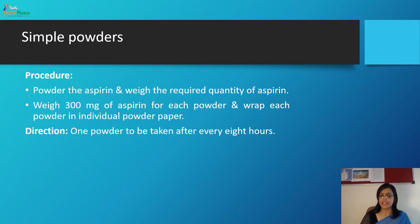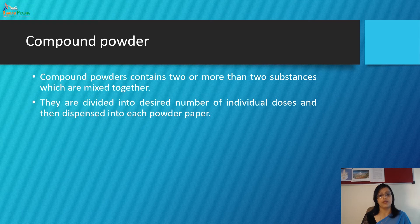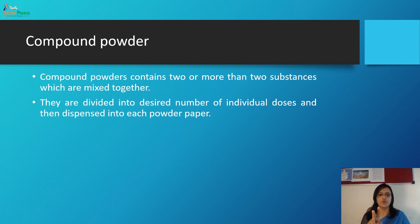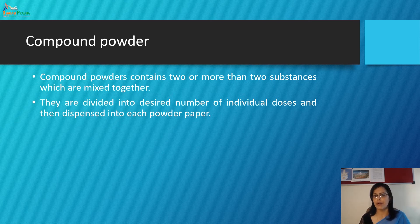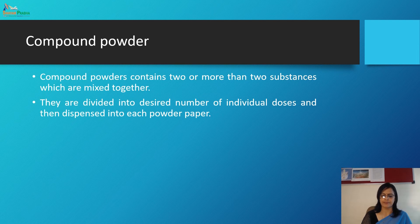Next is compound powder. Compound powder contains two or more substances mixed together. They are divided into the desired number of individual doses and then dispensed into each powder paper.